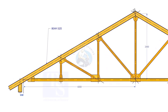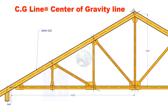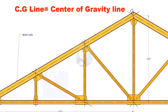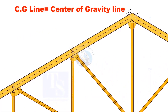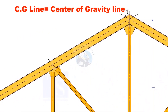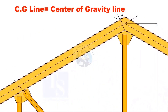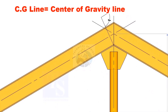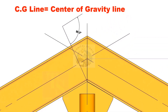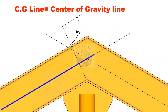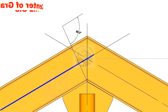In the drawing, usually the span and the height through the CG line of a truss are given. Remember that the CG line doesn't pass through the center of all objects — it depends on the shape and cross section of an object.